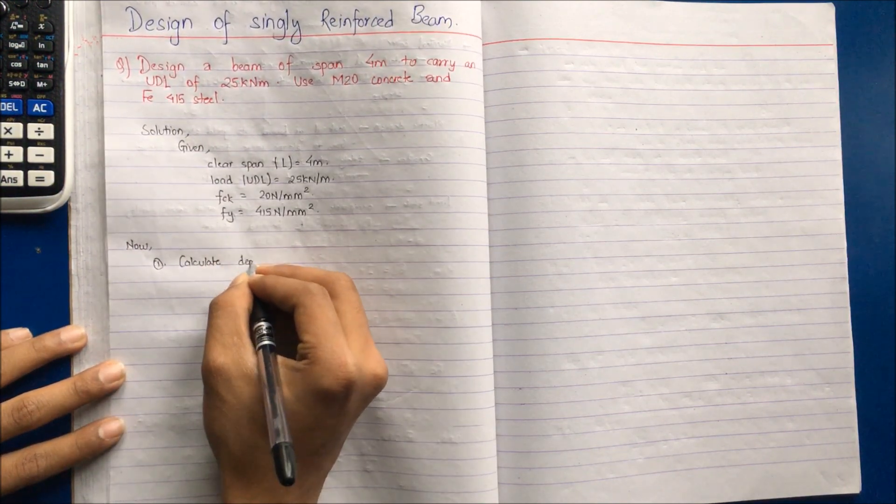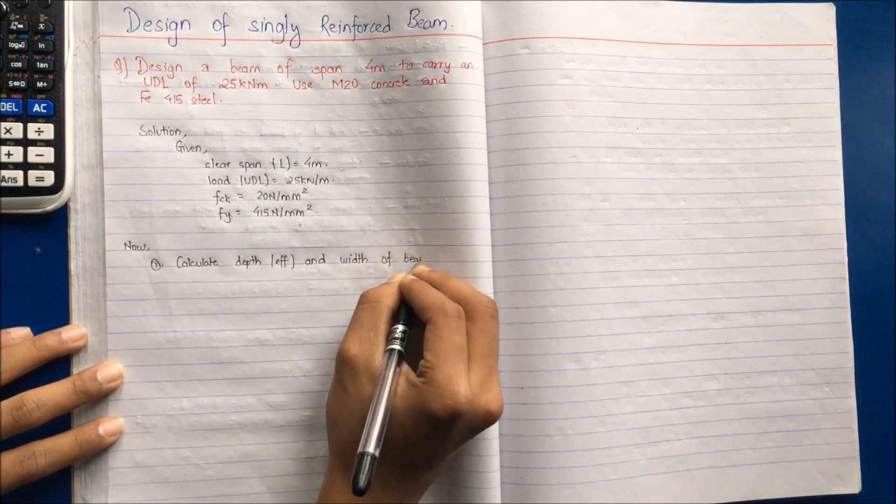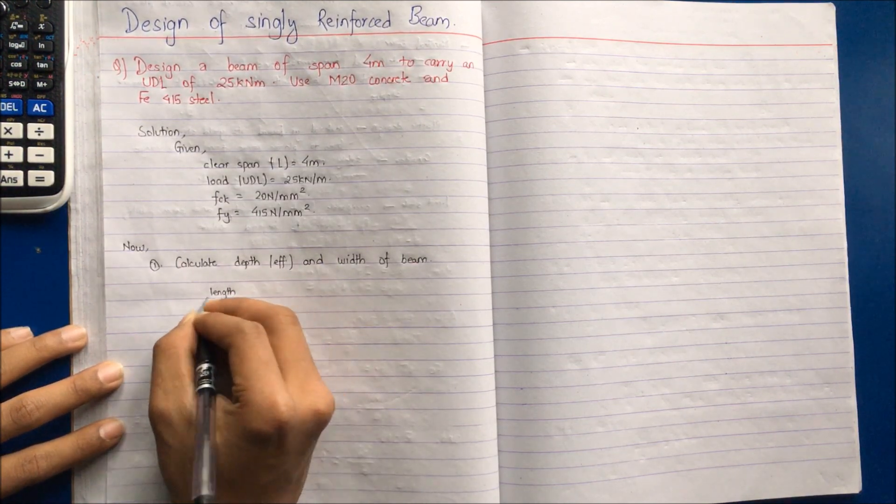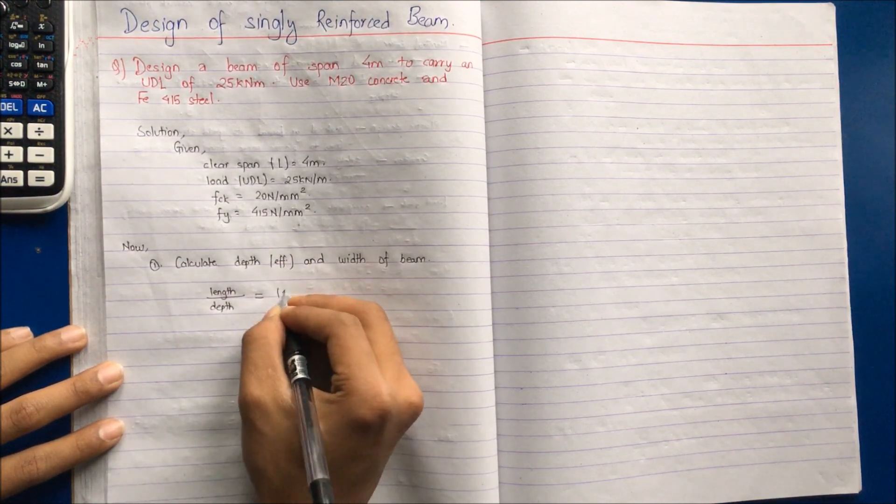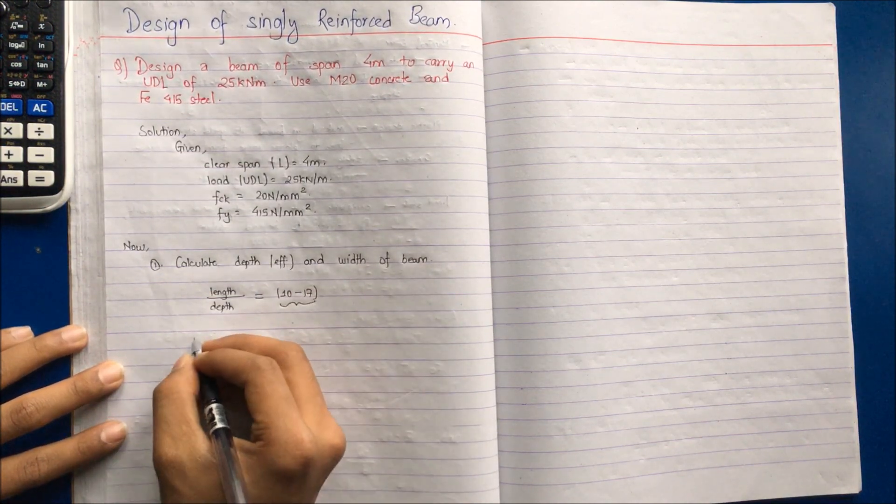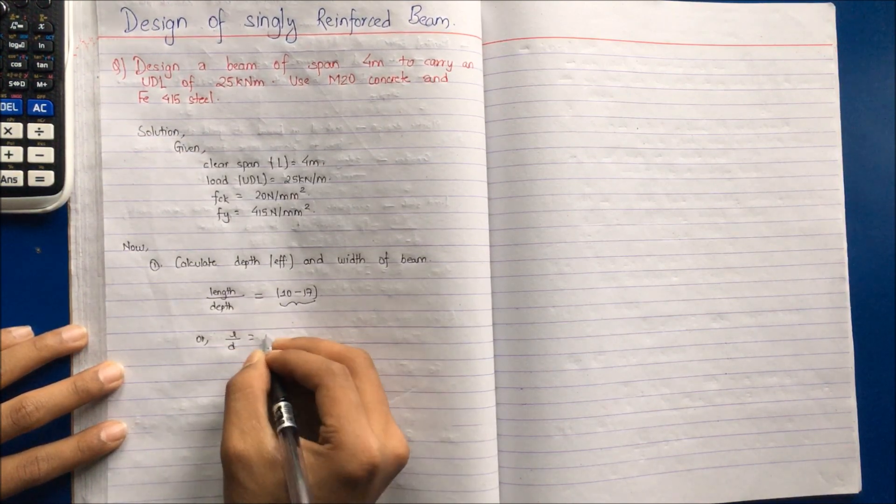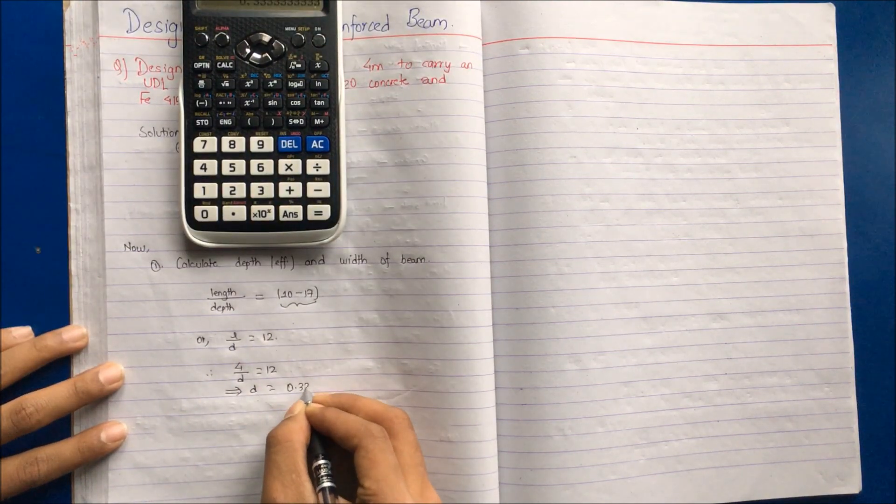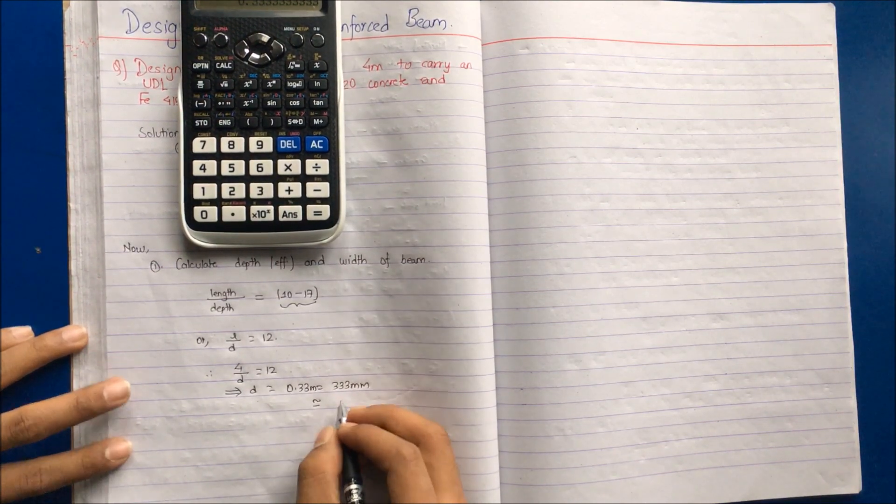The very first step is to calculate the depth that is effective depth and width of the beam. This step is avoided when you are provided with the effective depth or overall depth and width in the equation. For now, we are not provided with the depth and width. For the depth, the ratio of length and depth of the beam is used. The ratio of length and depth is taken in between 10 to 17. For now, I am taking L by D is equal to 12. Length being 4 meter, D effective is equal to 0.33 meter. And nearly taking this value as 400 mm.